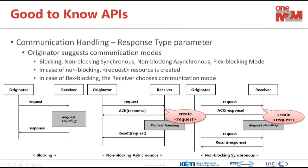In non-blocking asynchronous mode, we don't know when it will finish and the originator might not be able to receive the asynchronous message. In that case, the originator can send a request with response type set to non-blocking synchronous mode, and then it can later periodically fetch the result. That's non-blocking synchronous communication.